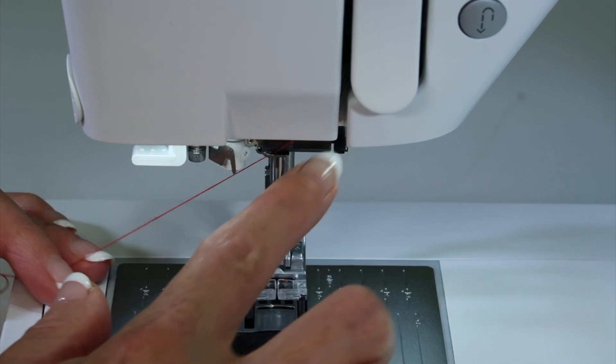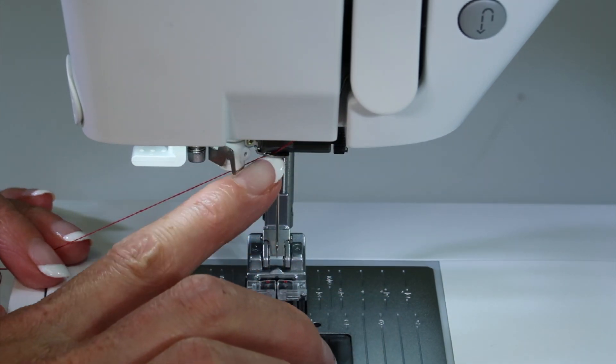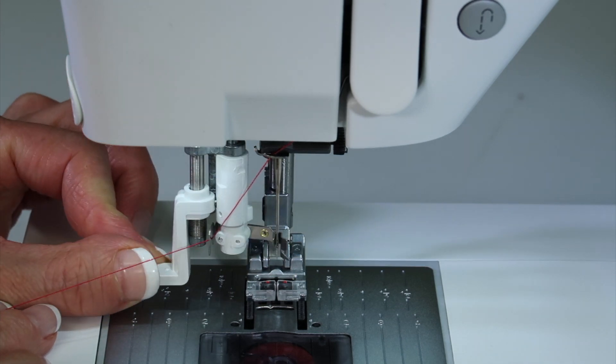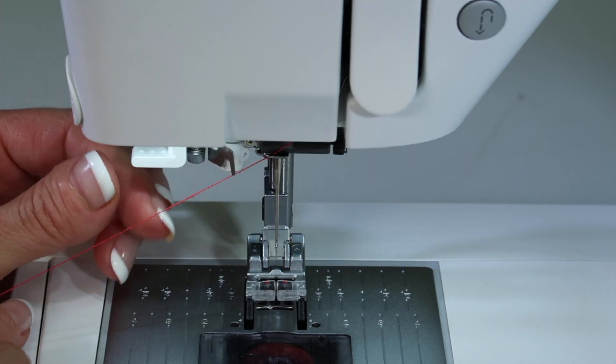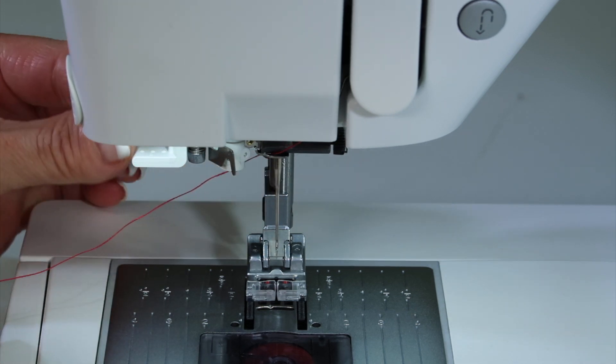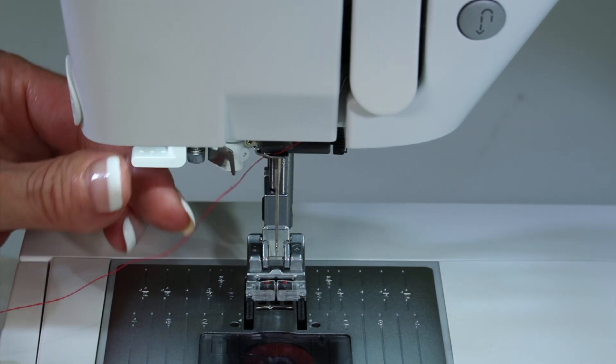Now if you've just put a fresh needle in and you do not get it high enough, this needle threader will not line up with the eye of the needle. That would be a clue to maybe reinsert your needle, make sure it gets high enough, and also a way to check that you've done it correctly.